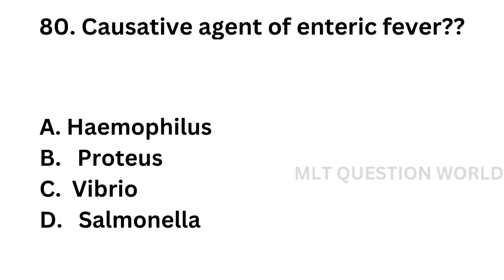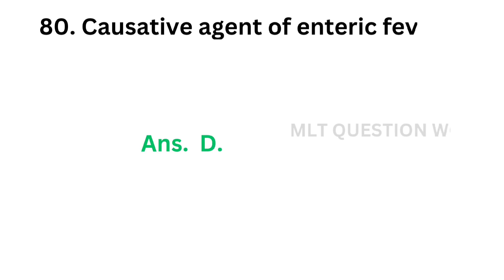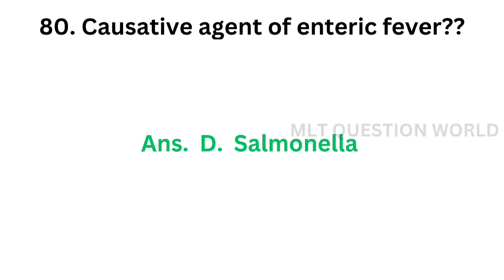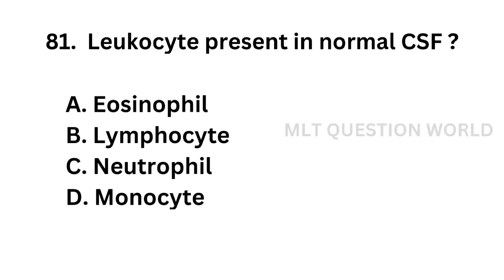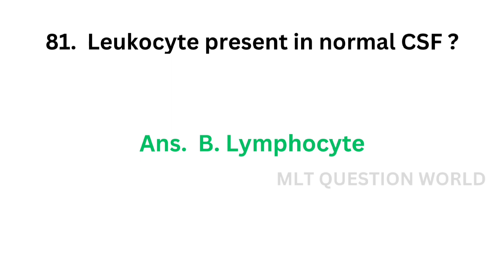Question number 80: Leucocyte present in normal CSF — Option B: Lymphocyte, Option C: Neutrophil, Option D: Monocyte. The correct answer is Option B, Lymphocyte. The leucocyte present in normal CSF is lymphocyte.